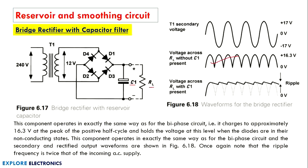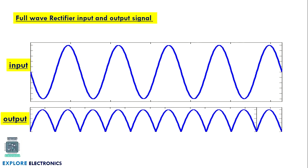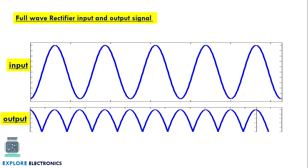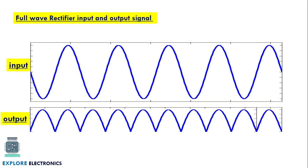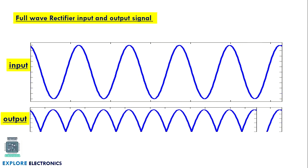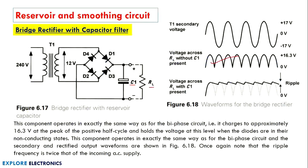That completes this video. We have discussed the half wave rectifier, full wave rectifier, how to obtain their outputs, and how to eliminate ripples using reservoir and smoothing circuits. Thank you.